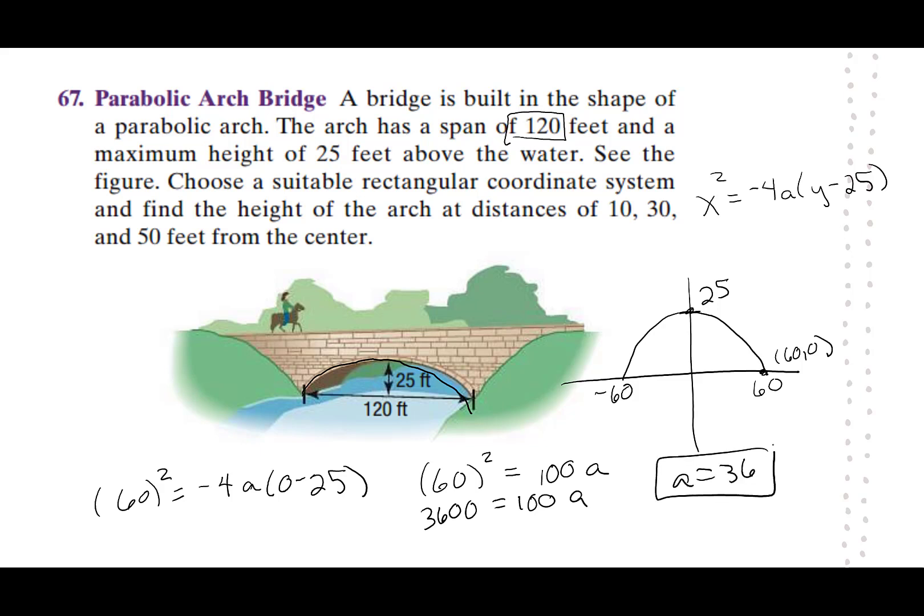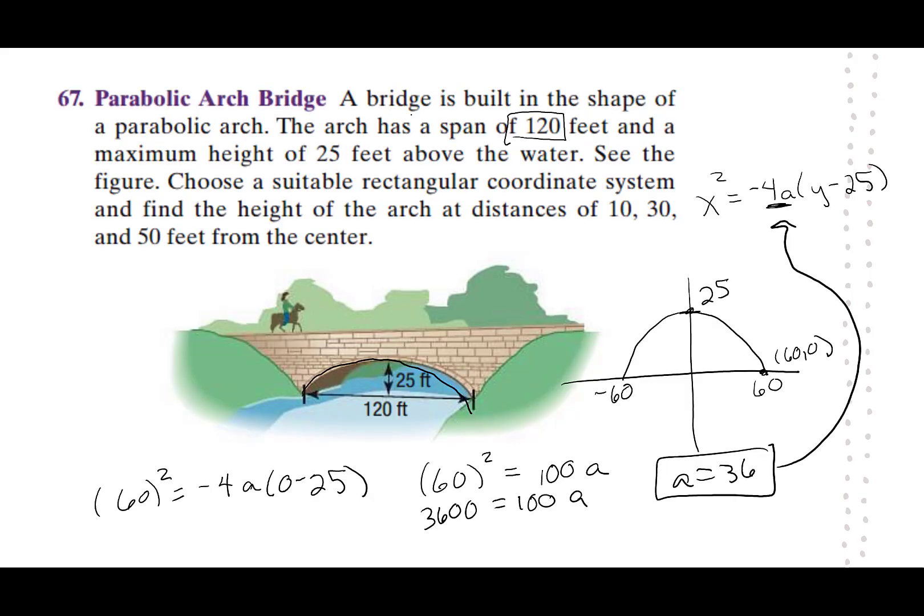That's helpful. We need to do 36 times 4 because we're going to plug that back in to here. So I have negative 4 times 36 is negative 144. So I have x squared is negative 144, and then this is y minus 25.